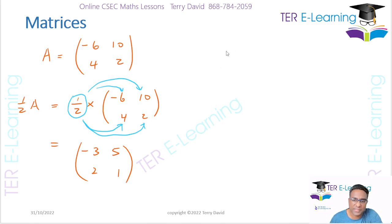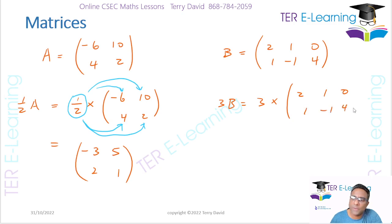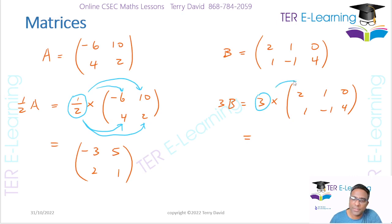All the examples so far have been 2×2 matrices, but we can have other sizes too. Let's say B = [2, 1, 0; 1, -1, 4] and I want to work out 3B. That's going to be 3 multiplied by whatever the matrix is — [2, 1, 0; 1, -1, 4]. I take that 3 and multiply by everything inside of that matrix.